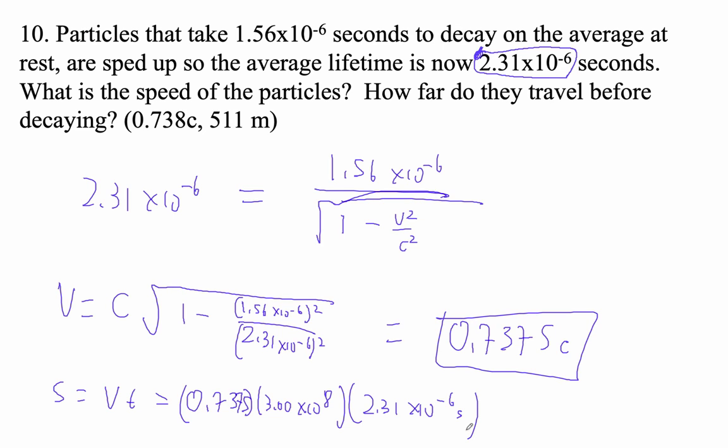And then the time is going to be 2.31 times 10 to the minus 6 seconds. We can do this. So that times 3e to the 8 times 2.31e minus 6. I get 511 meters. All right.